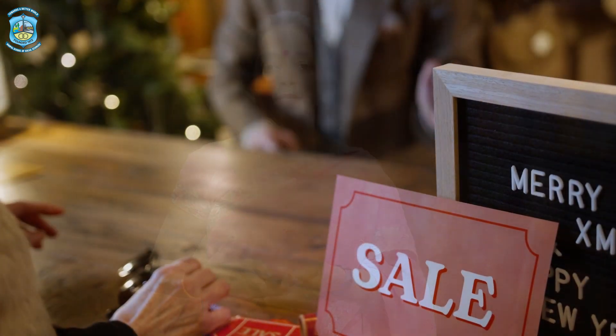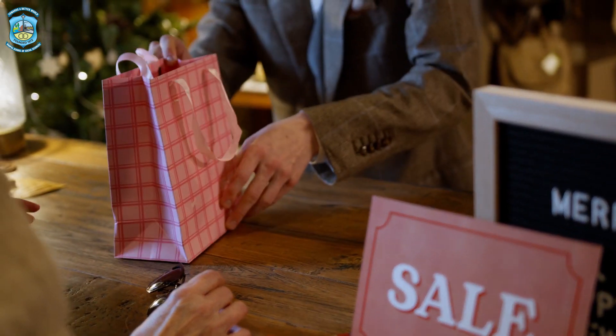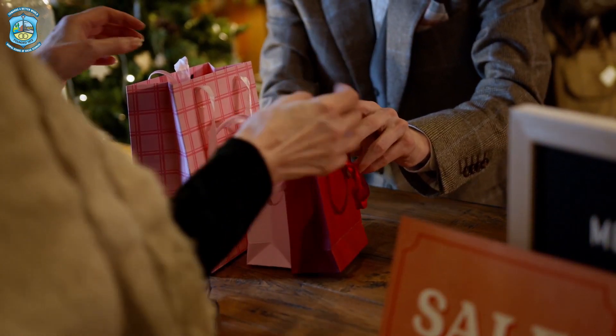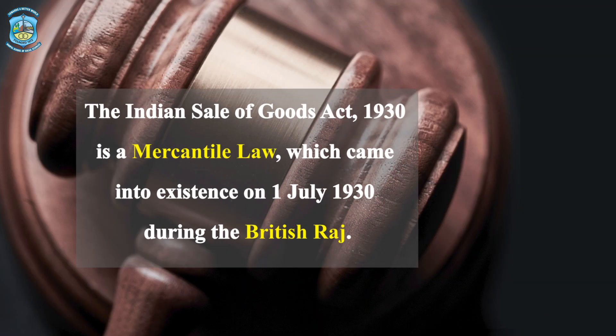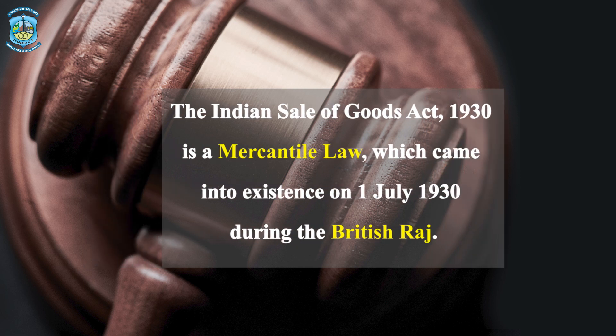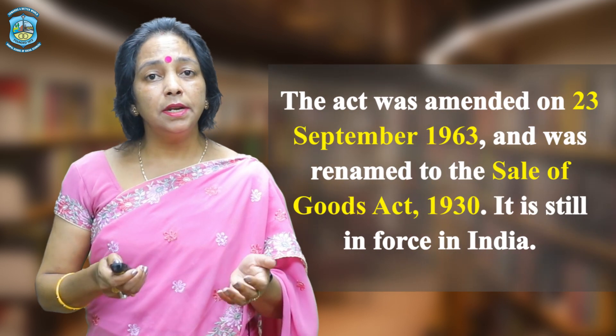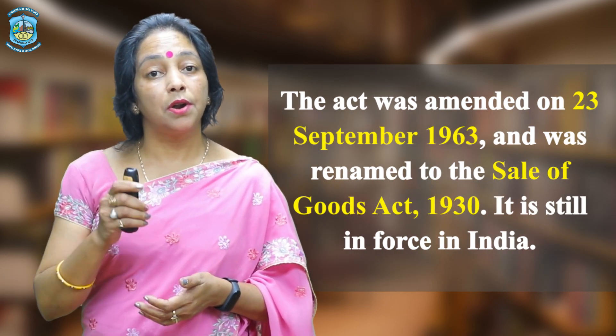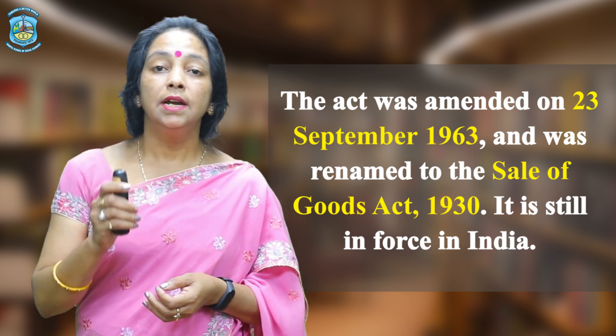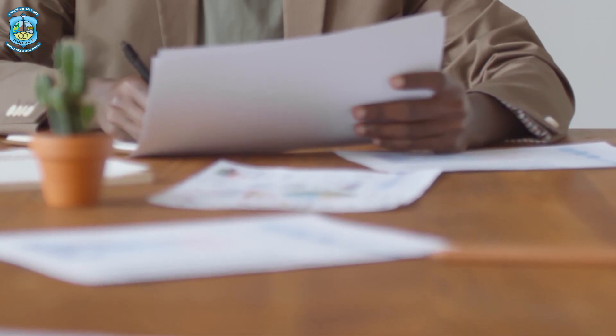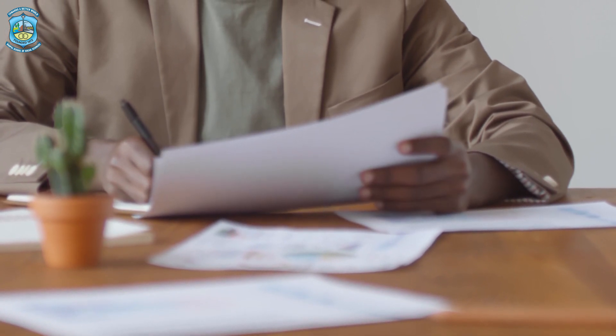The act helps to enhance, encourage and promote business transactions where the seller transfers or agrees to transfer the title in goods to the buyer for consideration. The Indian Sale of Goods Act 1930 is a mercantile law which came into existence on 1st July 1930 during the British period. The act was amended on 23rd September 1963 and is still in force in India. The act governs the sale of goods in all parts of India and defines various terms contained within the act itself.